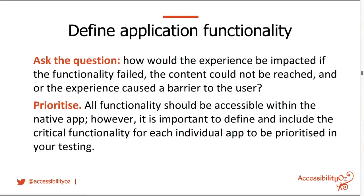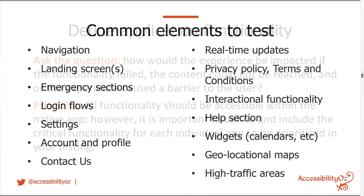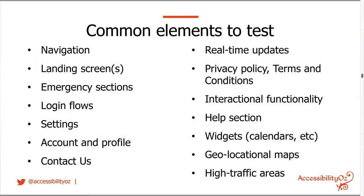Ask the question: how would the experience be impacted if the functionality failed, the content could not be reached, or the experience caused a barrier to the user? Then prioritize. All functionality should be accessible, but it's important to define and include the critical functionality for each individual app. You also need to test common elements in native apps: things like navigation, landing screens, emergency sections, login flows, settings, accounts and profiles, contact us, real-time updates, privacy policy, terms and conditions, interactional functionality, help sections, widgets, calendars, geolocational maps, and high-traffic areas.